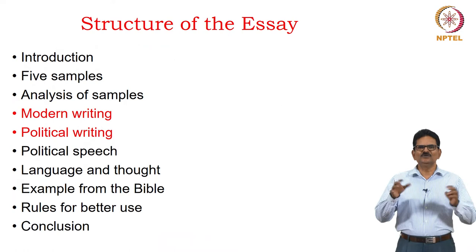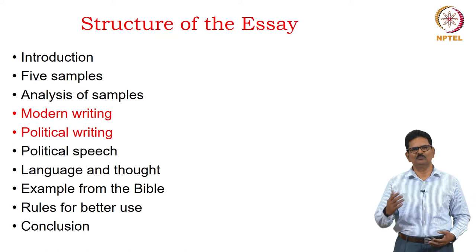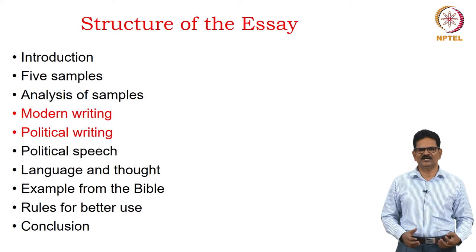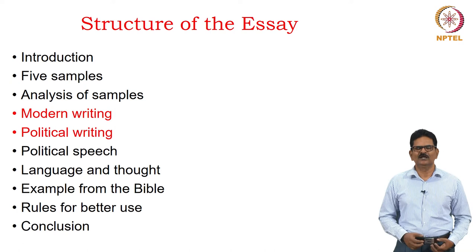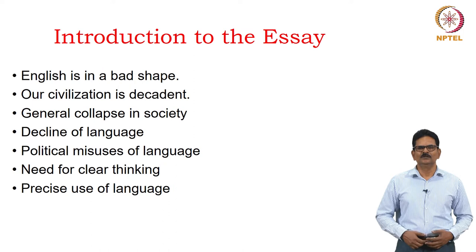Let's look into the structure of the essay. Orwell gives a brief introduction, then presents five samples and analyses them. He talks about modern writing, political writing, and refers to political speeches. He discusses the close relationship between language and thought — if language is corrupt, thought becomes corrupt, and vice versa. He gives examples from the Bible to show how simple English can convey ideas clearly, then gives rules for good use of English, and finally concludes the essay.